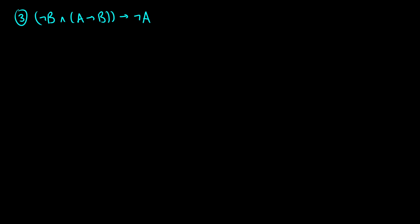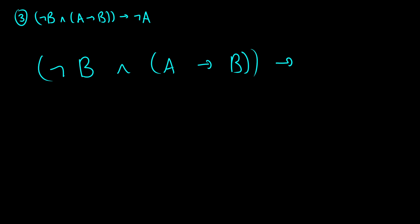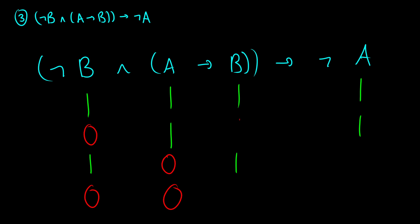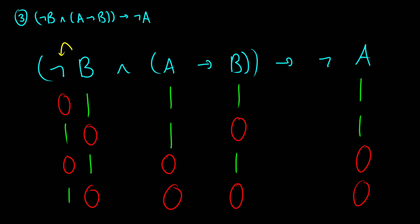One more to go. We'll fill out all the values: A will be 1, 1, 0, 0 and B will be 1, 0, 1, 0. Let's deal with NOT B first — just flipping the values of B to give us 0, 1, 0, 1. Then we flip the values of A — 1, 1, 0, 0 — to give us 0, 0, 1, 1 for NOT A.